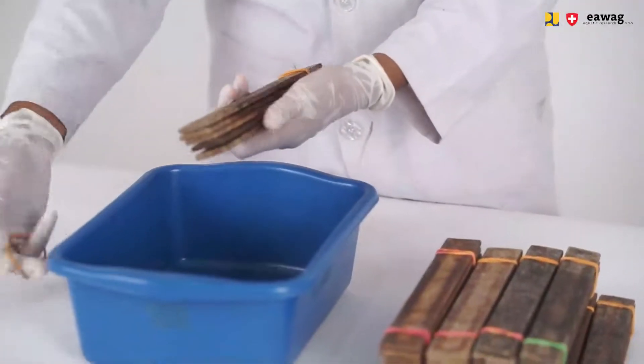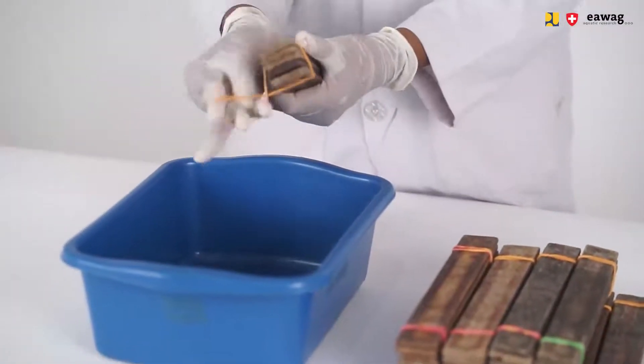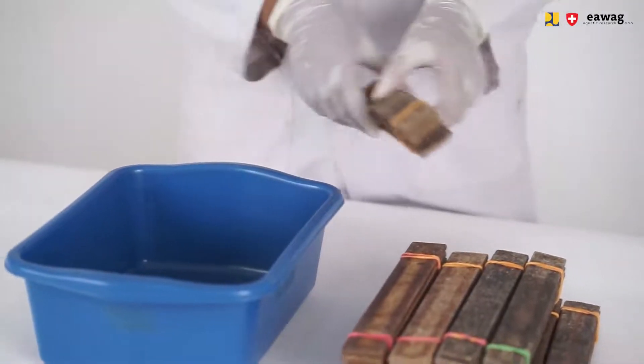Make sure to add two rubber bands on both ends of the bundle to keep them together, and prepare 10 of these bundles for each loft cage.